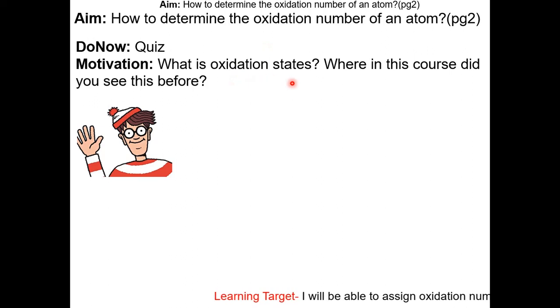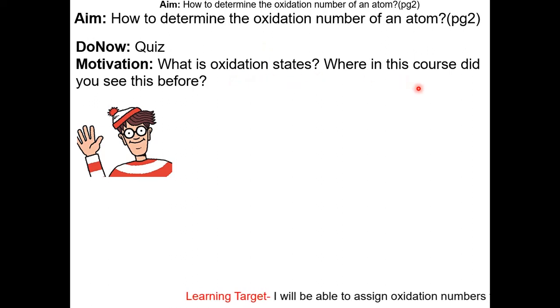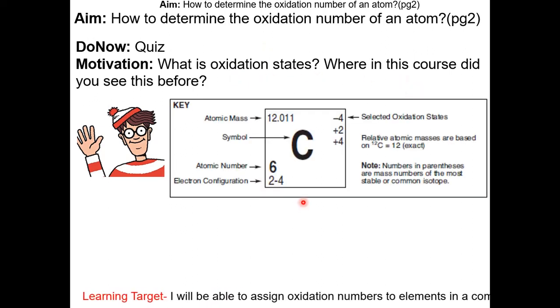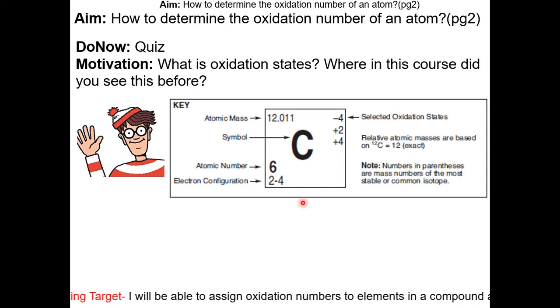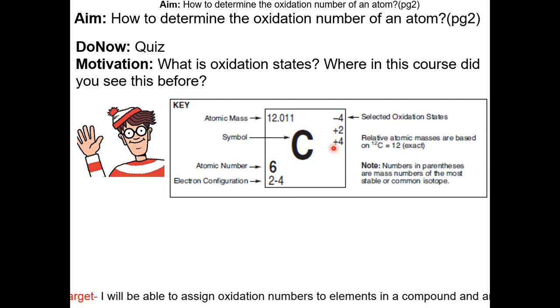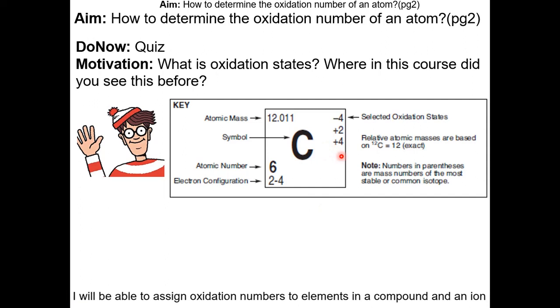What is an oxidation state? Where in the course did we see this before? If you look at the periodic table in the reference table, you can see that the oxidation numbers of each element are listed in the top right corner.